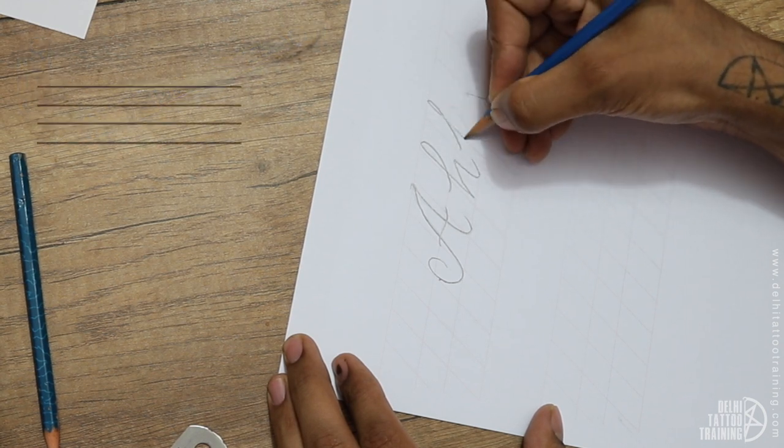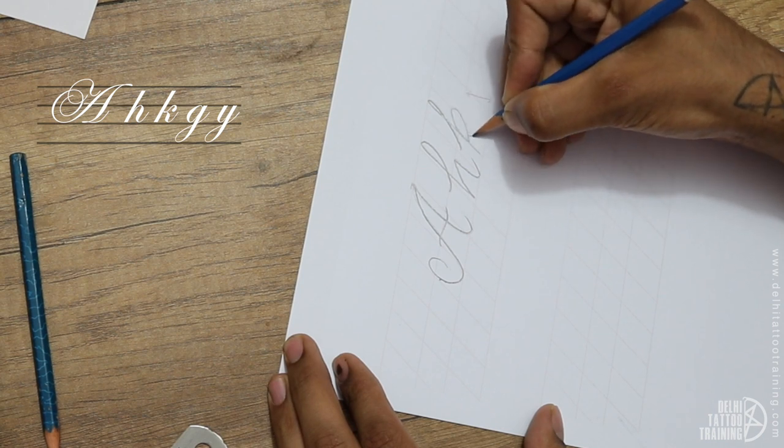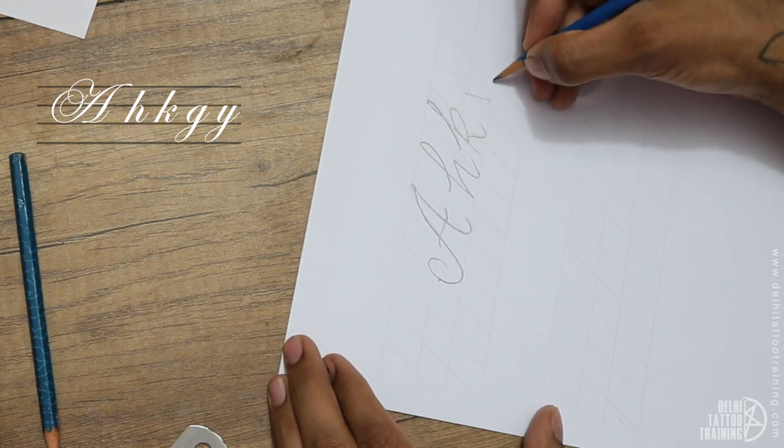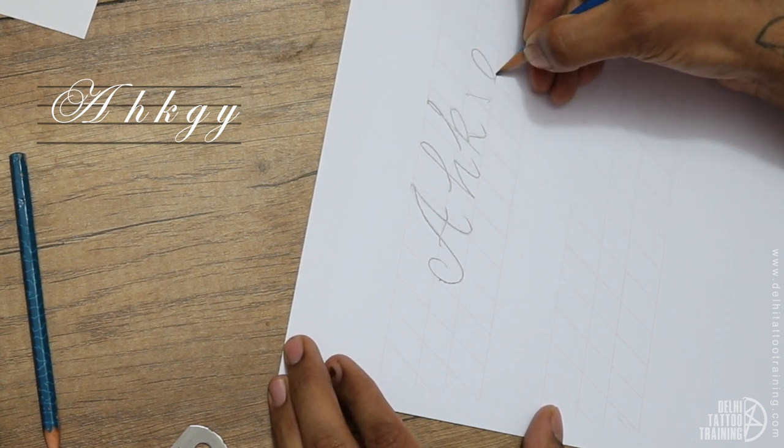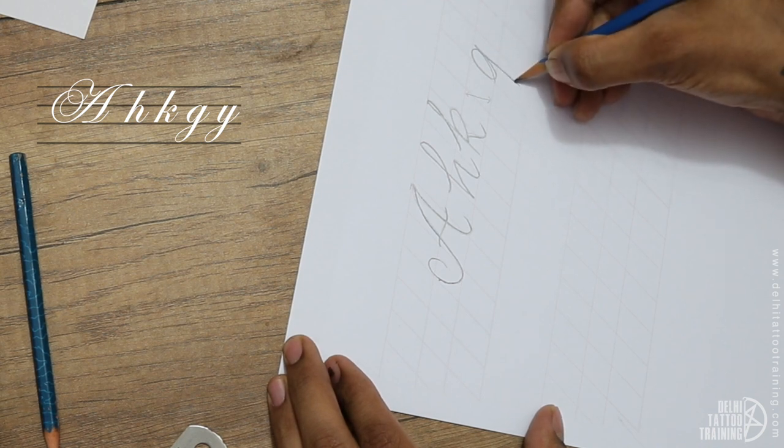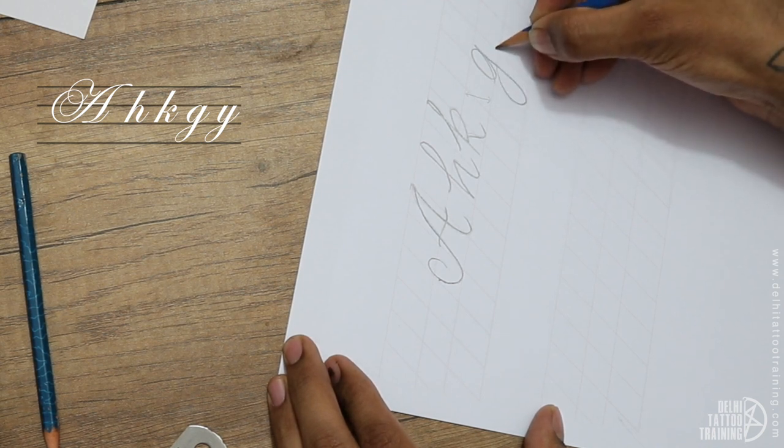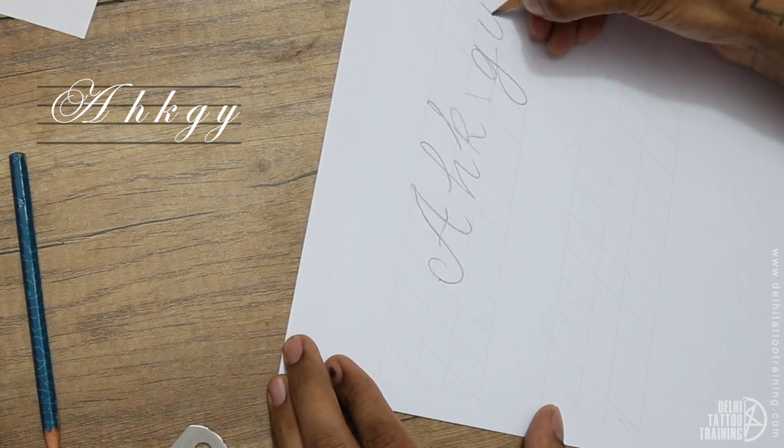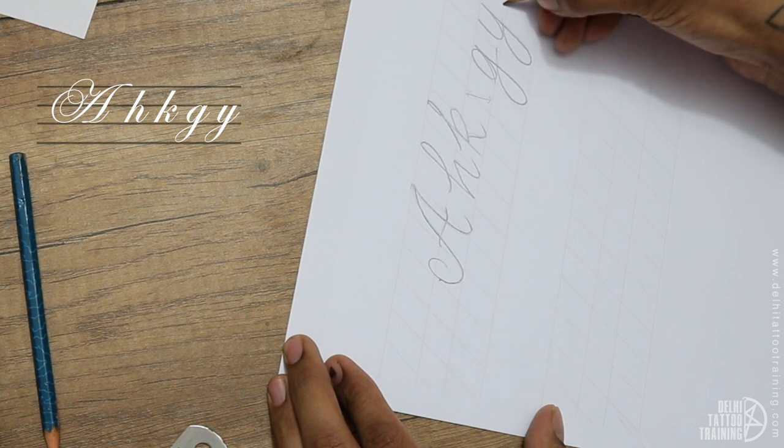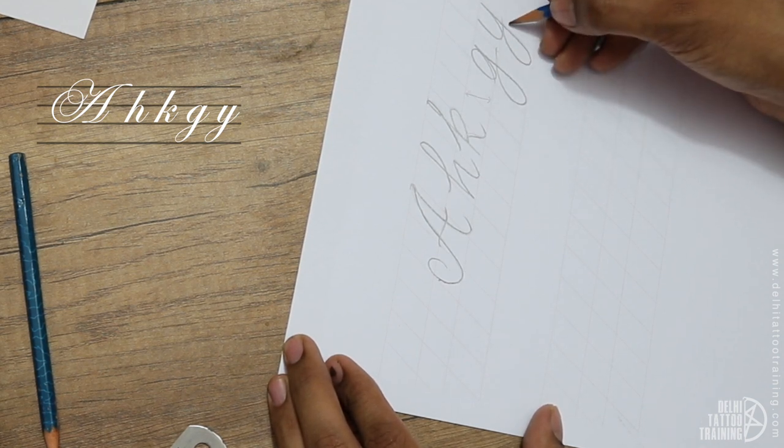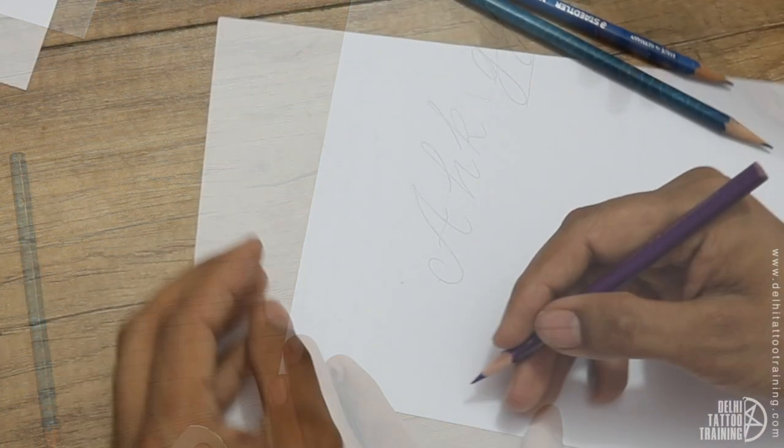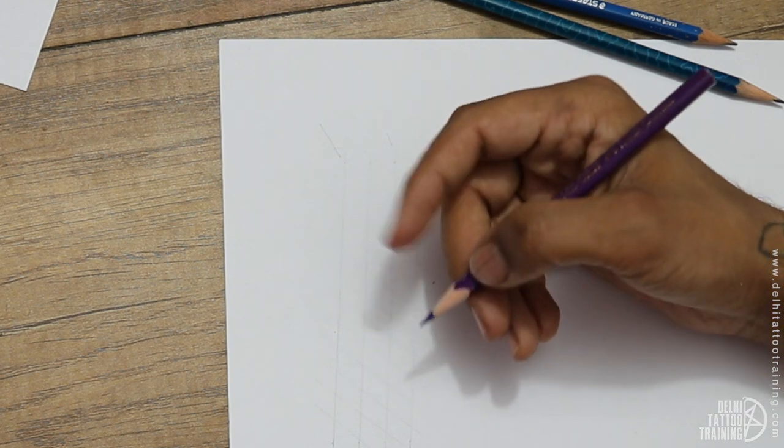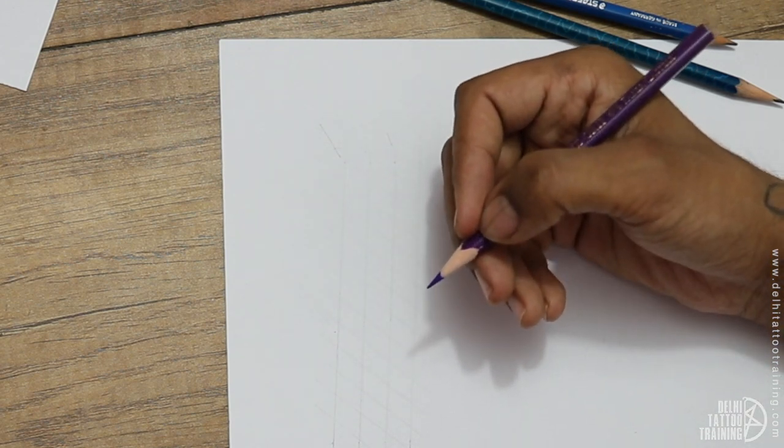Now the alphabets like A, H, and K - the top of these alphabets should always not be above the ascender line. We have to be careful for the alphabets like G, Y, etc. The bottom of these alphabets should not go below the descender line. I'm using a colored pencil now, so with the pressure of my pencil I can always go light and dark.